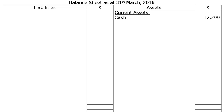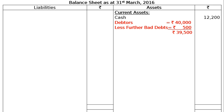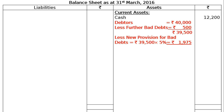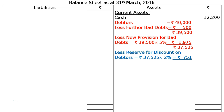Under current assets: cash Rs 12,200; debtors Rs 40,000 less further bad debt Rs 500 = Rs 39,500; less new provision for bad debt at 5% = Rs 1,975; leaving Rs 37,525. From this we deduct the reserve for discount on debtors: Rs 37,525 × 2% = Rs 751, giving a net debtors figure in the final column of Rs 36,774. Accrued interest on investments (calculated for 9 months) = Rs 2,250, also shown as a current asset.